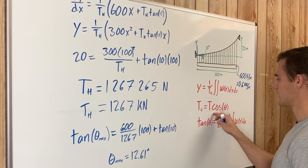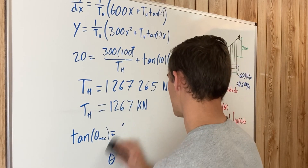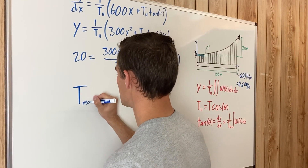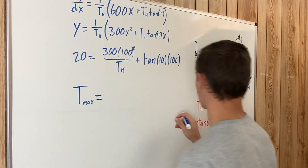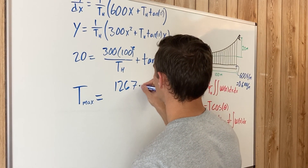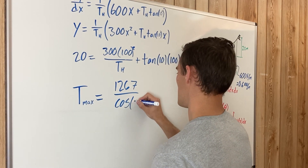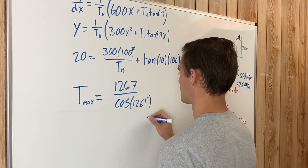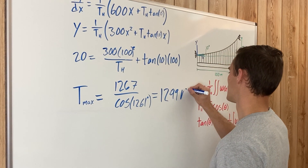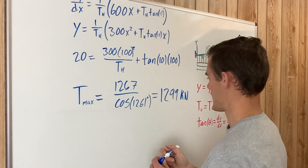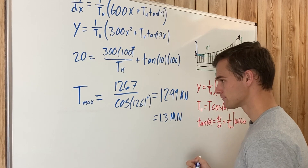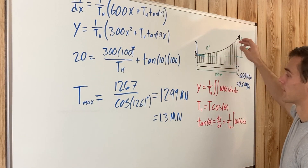With θmax = 12.61° and Th = 1267 kN, we plug into the tension equation: Tmax = Th / cos(θmax) = 1267 / cos(12.61°) ≈ 1299 kilonewtons, which can also be written as approximately 1.3 meganewtons. This maximum tension occurs at the higher reaction point support.